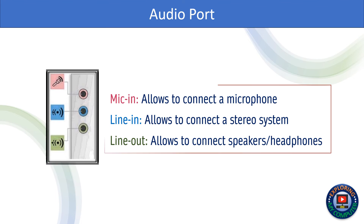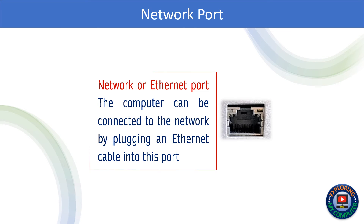Mic-in allows connecting a microphone. Line-in allows connecting a stereo system. Line-out allows connecting speakers or headphones. The Network or Ethernet port allows the computer to be connected to the network by plugging an Ethernet cable into this port.